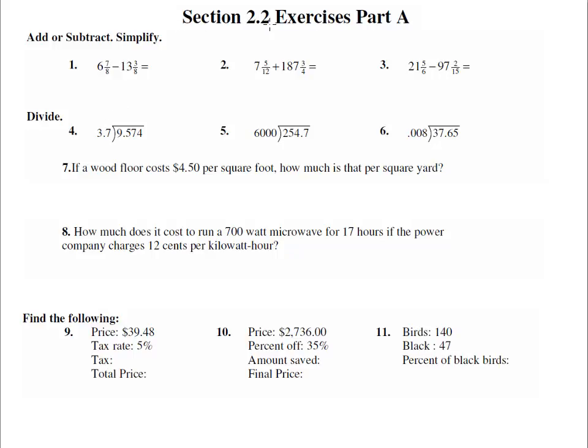Here we are in Section 2.2, Exercises Part A, numbers 1 through 11. It says add or subtract and then simplify. Now adding and subtracting is from Chapter 1, so here are some review problems to make sure we've done it. But we get to use calculators for the remainder of the time here. We could do this by hand, they even have common denominators, but we'll pull out our calculator.